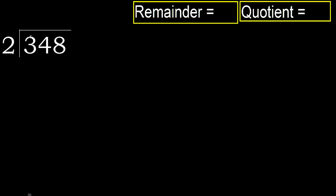348 divided by 2. 3 is not less. 2 multiplied by which number is nearest to 3 but not greater? 2 multiplied by 2 is 4 — 4 is greater. 2 multiplied by 1 is 2 — not greater. 3 minus 2 is 1. Next.